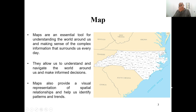GIS essentially stems from the concept of the map, because maps are essential for understanding the world around us. They allow us to look at our surroundings very easily, navigate the world, and help us make informed decisions. Maps provide a visual representation of spatial relationships — for example, surrounding North Carolina, you can see which states are to the north, east, and west, and easily understand those spatial relationships.